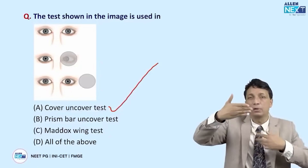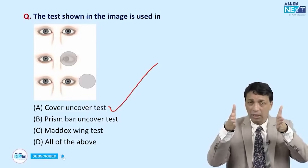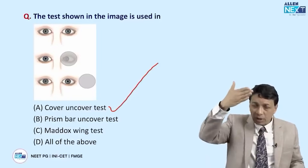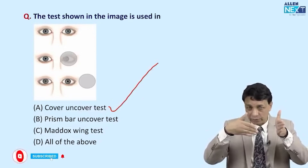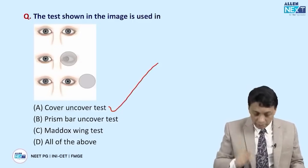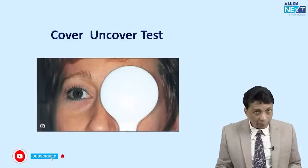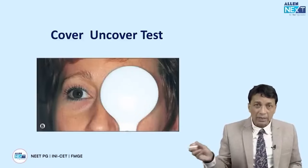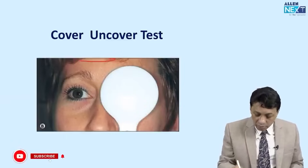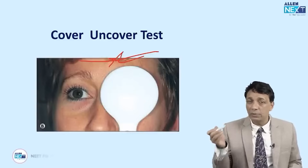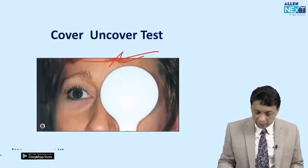The cover-uncover test picks up phorias — squints that cannot be seen directly because they are latent. When you cover the eye, you break the fusion that keeps both eyes aligned. In a phoria, the eyes are parallel in normal gaze due to fusion; once covered, the eye moves to its resting position (esotropia here). On removing the cover, the eye immediately moves back to fixate. If the eye moves from in to out on uncovering, it is esotropia; out to in is exotropia; no movement means no squint.